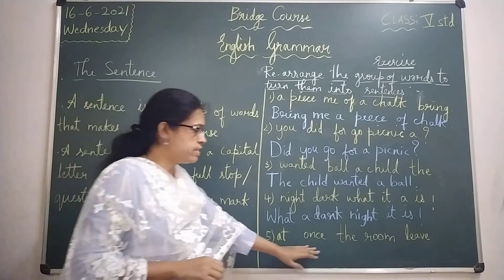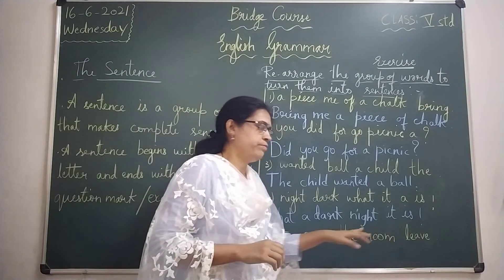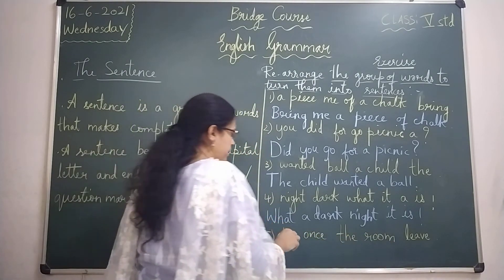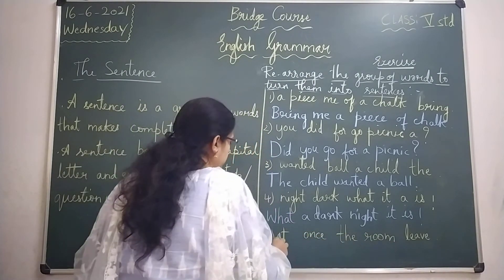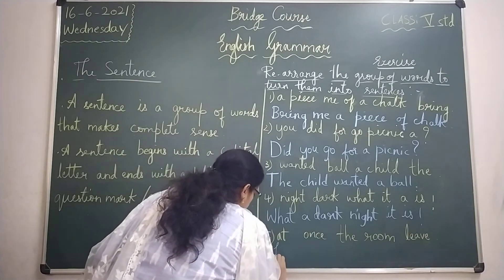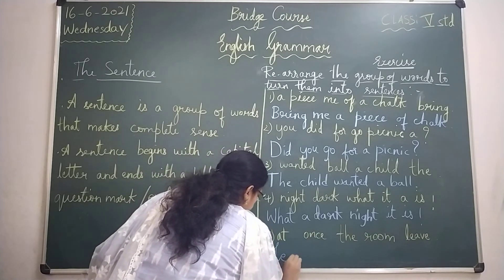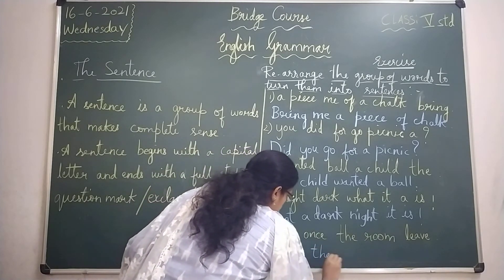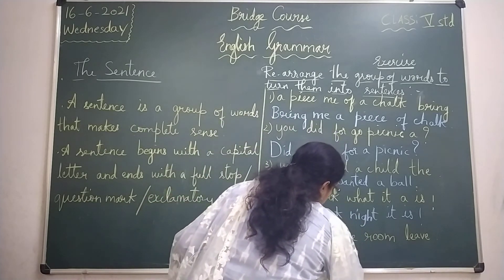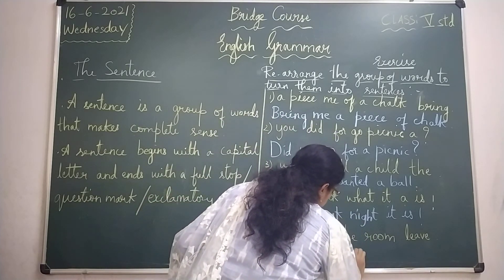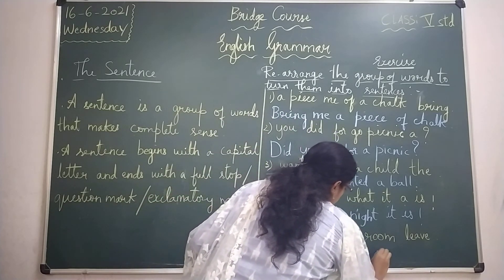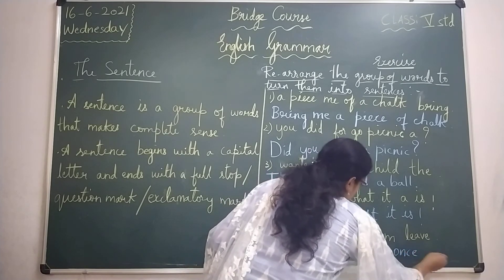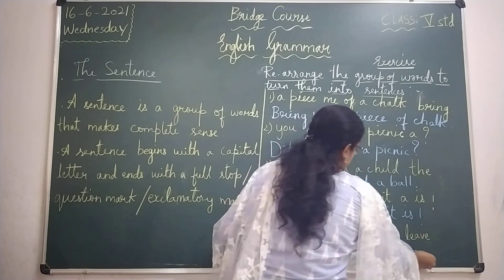The last group of words is: 'at once the room leave.' So you have to rearrange it: 'Leave the room at once.' Capital 'L' — 'Leave the room at once.' This makes complete sense.